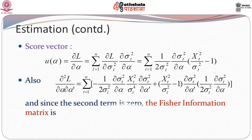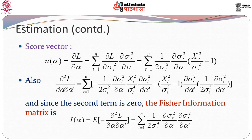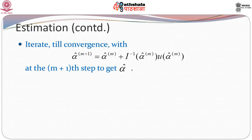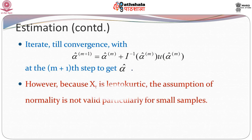The second derivative term simplifies, with the second term coming out to be 0. The Fisher information matrix, as the expectation of the negative of the second derivative, comes out to be the sum over t from 1 to n of (1 over 2 sigma_t to the power 4) times (delta sigma_t squared over delta alpha)(delta sigma_t squared over delta alpha prime). We then iterate until convergence: the (m+1)-th step estimate of alpha-hat is the m-th step estimate plus I-inverse of alpha-hat_m times u(alpha-hat_m). This continues until convergence, giving us the estimated alpha-hat.